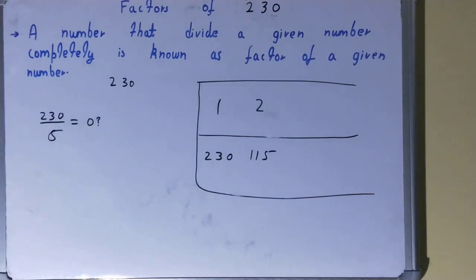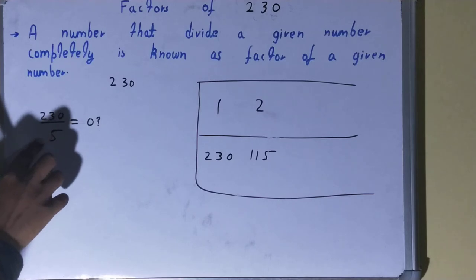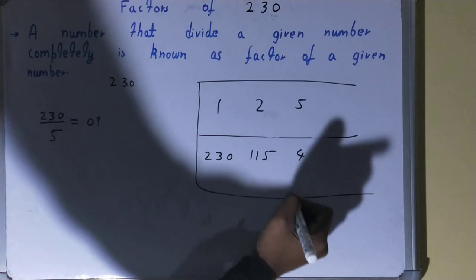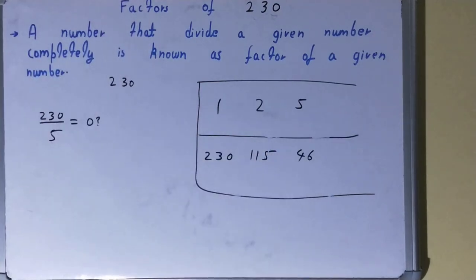The last digit is zero, so yes, it is divided by 5. Okay, so 5 is a factor. 5 into what times? 5 fours are 20, 3-zero. 5 sixes are 30. It will be 46 times. All right, after 5